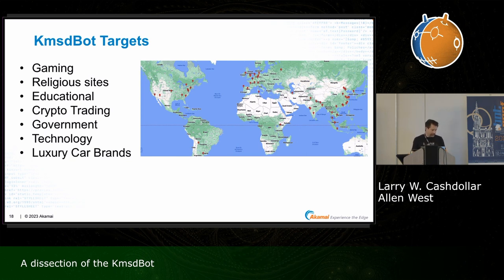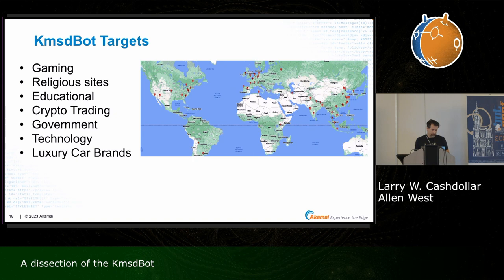Through observing the different attacks, we could also observe the different victims being targeted. This tells us more about the clients — the people paying them to attack — than it does about the malware author. Some of the popular targets we thought were gaming, with 5M and RedM. We also saw religious sites, education institutes, a lot of crypto, different governments, technology and hosting, and luxury car brands. Some of the luxury car brand targeting tied into gaming, possibly intellectual property disputes or legal battles, which you'd see spike when people started attacking them.